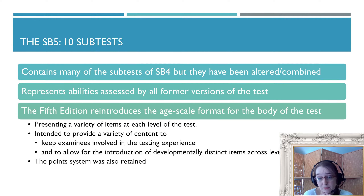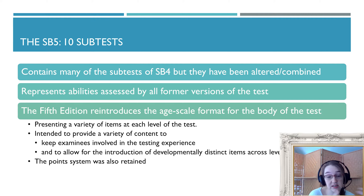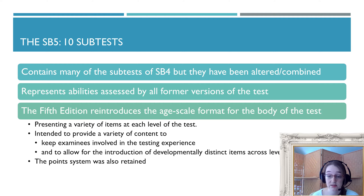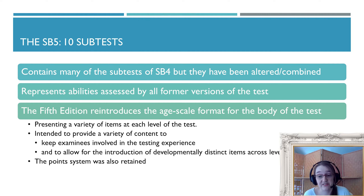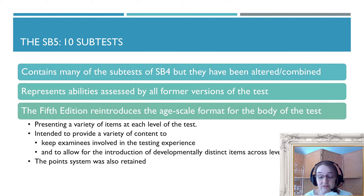The fifth edition kind of smushes the subtests together a bit so as not to overly reward the verbal aspects of the score. But in theory, because it has all the older skill sets included, the idea is to allow scores to be comparable across editions — so if you have an older score, it can be converted. The fifth edition also reintroduces the age-scale format back into the test.